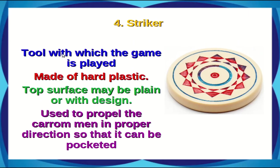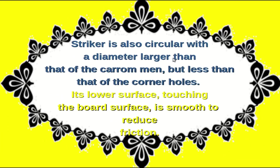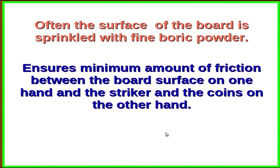Finally, the striker is the tool with which the game is played. It is made of hard plastic, and is used to propel the carom men in proper directions so that they can be pocketed. The striker is circular with a diameter larger than that of the carom men but less than that of the corner holes; its standard diameter is around 4.1 cm. It needs to be heavy enough to strike with sufficient force but not so heavy as to send coins jumping out. Often the board surface is sprinkled with fine boric powder to ensure minimum friction between the board surface and the striker and coins.